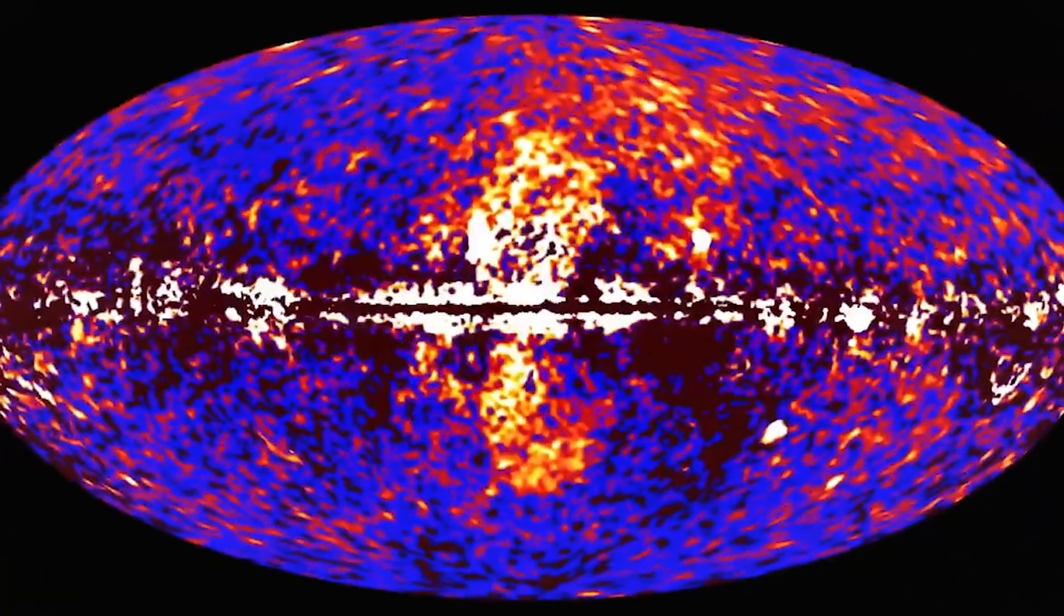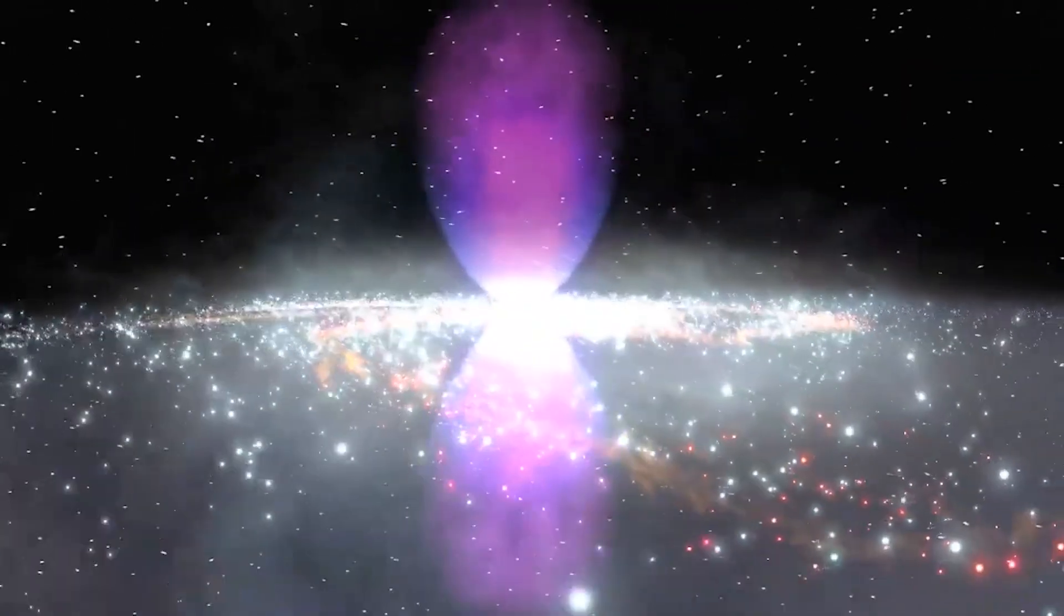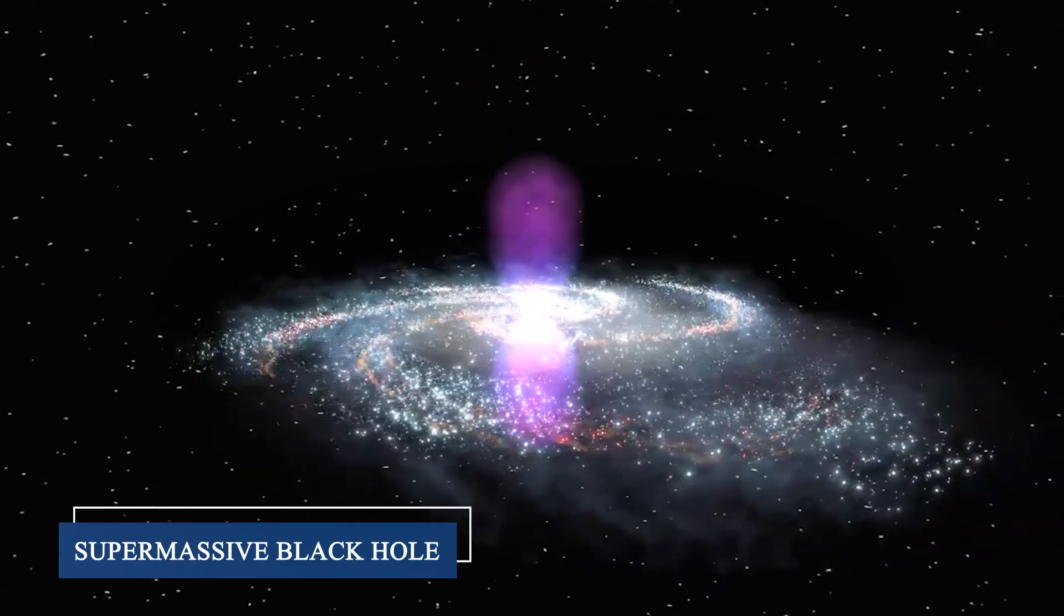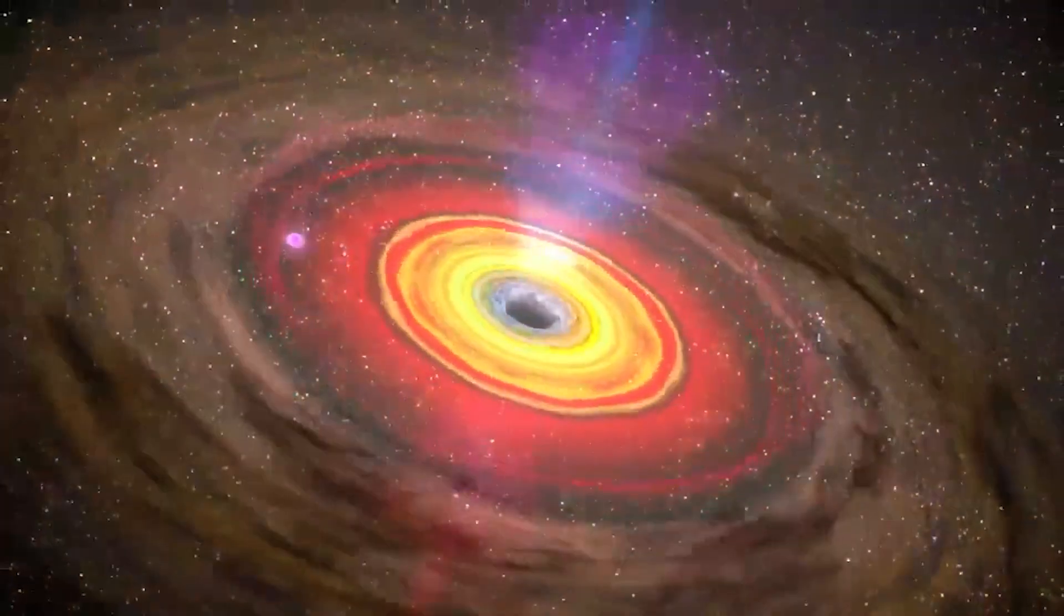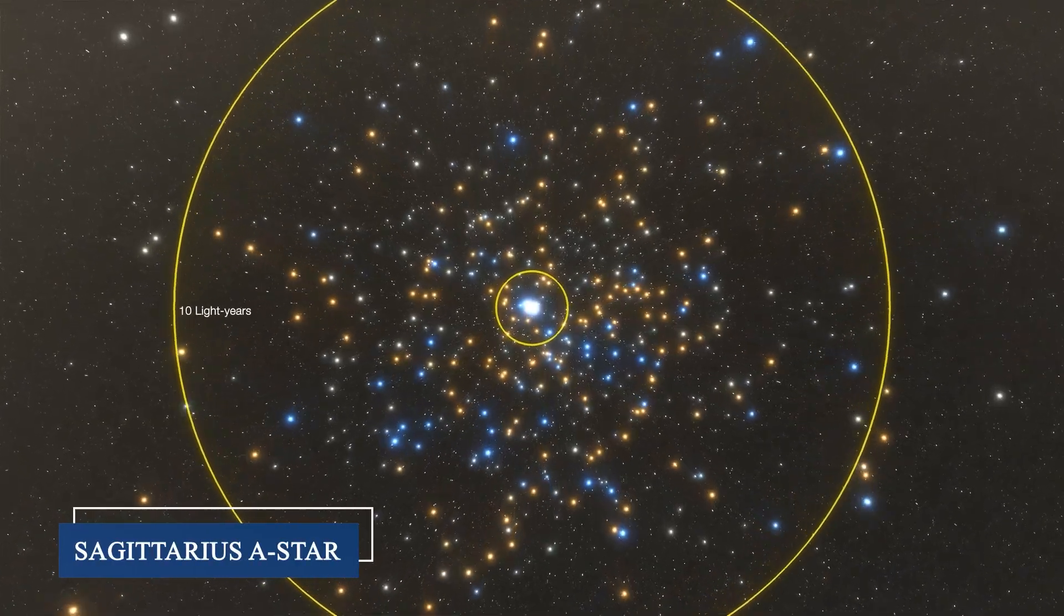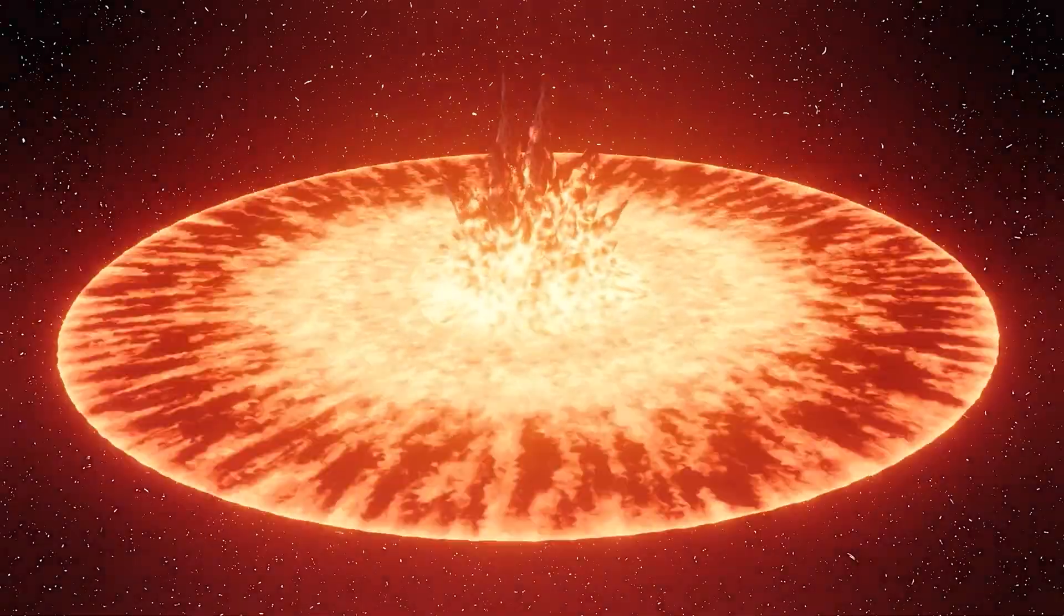But here's what makes this discovery truly remarkable. These bubbles were likely created by our galaxy's central supermassive black hole during a violent feeding frenzy millions of years ago. When Sagittarius A-Star, the 4 million solar mass black hole at our galaxy's heart, devoured massive amounts of matter, it blasted jets of material straight up and down, creating these cosmic monuments that still glow today.